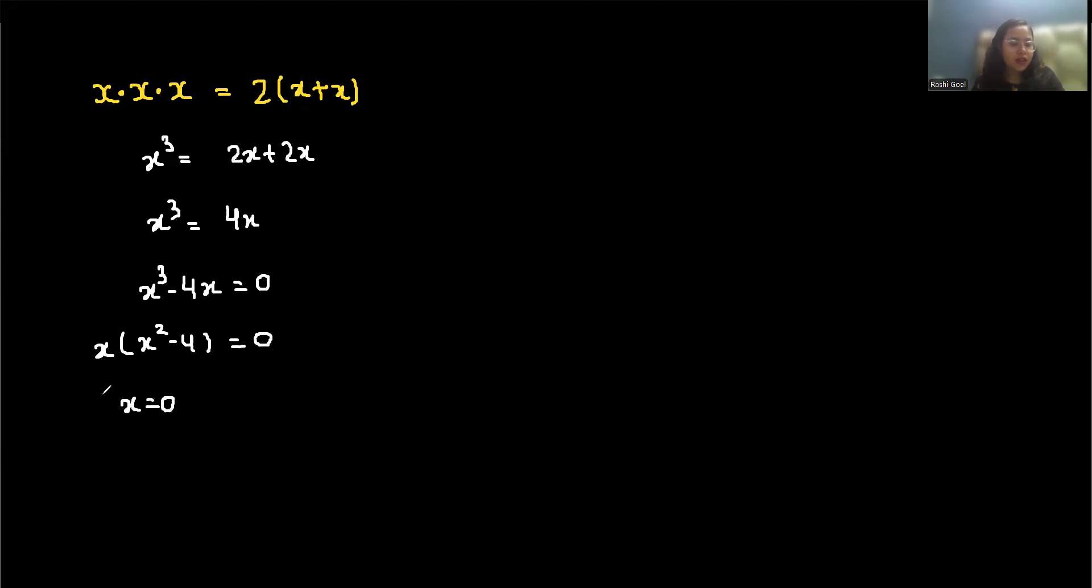Here the first factor is x equals 0 and second x square minus 4 equals 0. Four I can write as 2 square equals 0. Now we know the identity that is a square minus b square equals a minus b times a plus b.